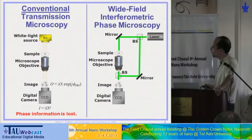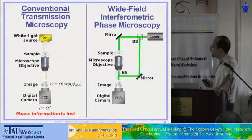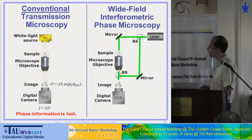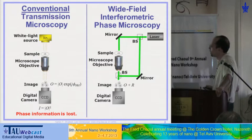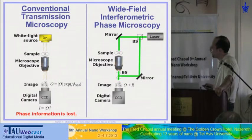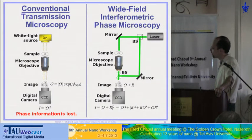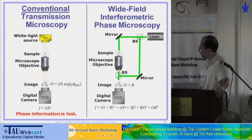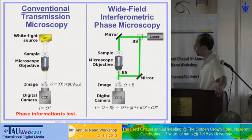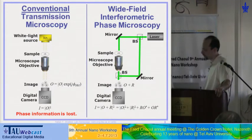We have a sample beam interacting with the sample and a reference beam coming directly from the source. Because the source has a certain degree of coherence, these two beams interfere on the camera. So instead of just recording O — a complex waveform — we record a superposition between the object wave and the reference wave. The camera makes absolute value square on this superposition, and when we open these brackets we get four elements. Although we recorded intensity, we were able to record the complex waveform of the object — this happens because of the holographic mathematical principle.